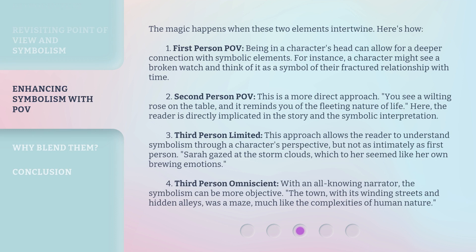The magic happens when these two elements intertwine. Here's how. First person POV: being in a character's head can allow for a deeper connection with symbolic elements. For instance, a character might see a broken watch and think of it as a symbol of their fractured relationship with time. Second person POV is a more direct approach — you see a wilting rose on the table, and it reminds you of the fleeting nature of life. Here, the reader is directly implicated in the story and the symbolic interpretation.